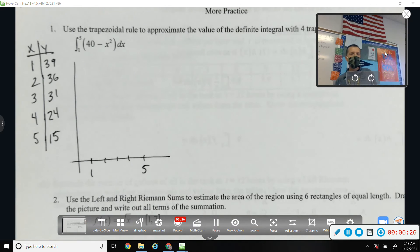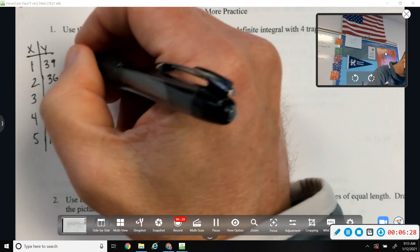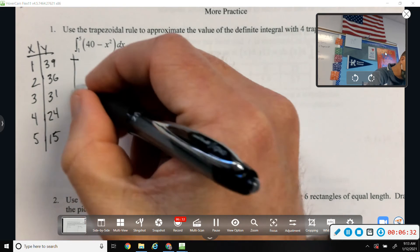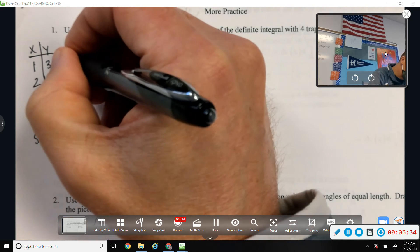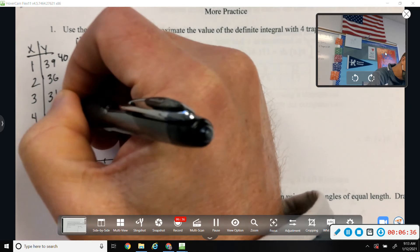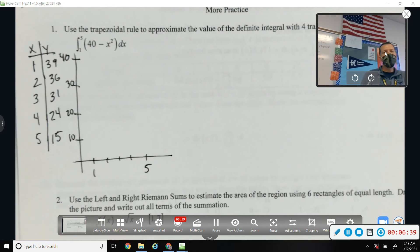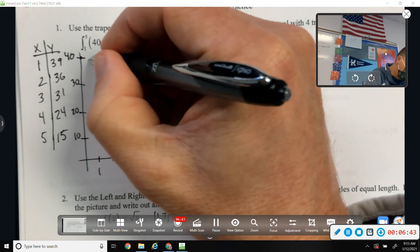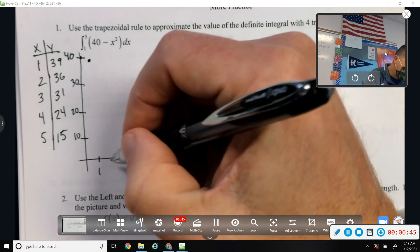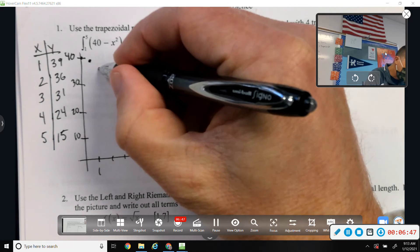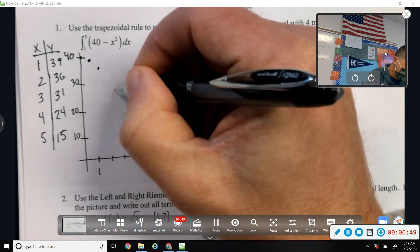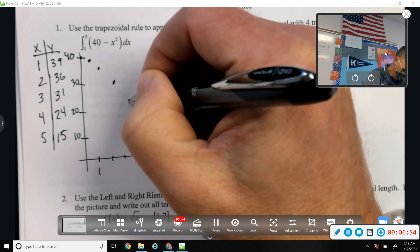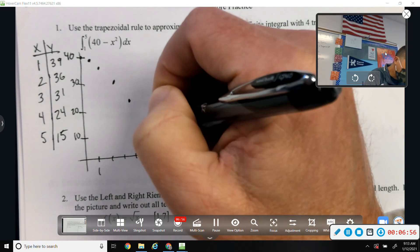So, for 1 to 5, let's see here. Do a scale of 10. So, at 1, I'm at 39. At 2, we're at 36. At 3, we're at 31. At 4, we're at 24. And at 5, we're at 15.